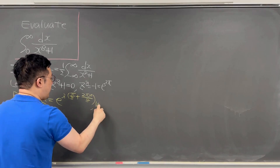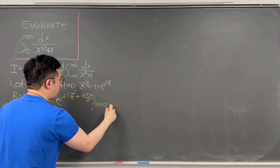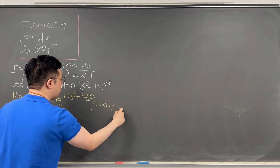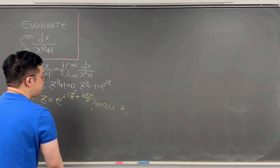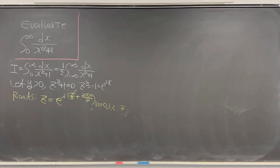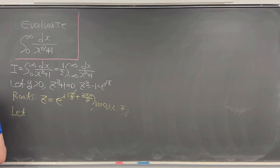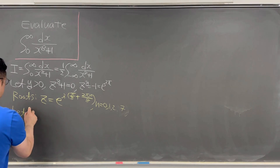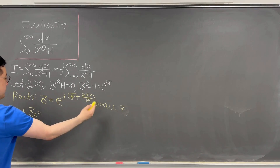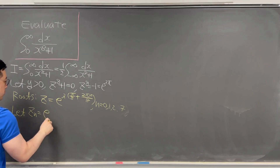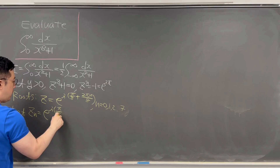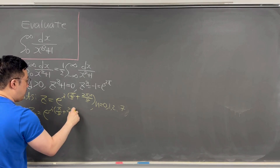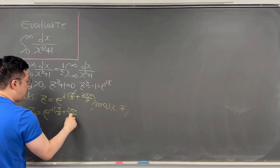Here n runs from 0, 1, 2, all the way up to 7. So I'll define z_n as e^(i·(π/8 + 2πn/8)).